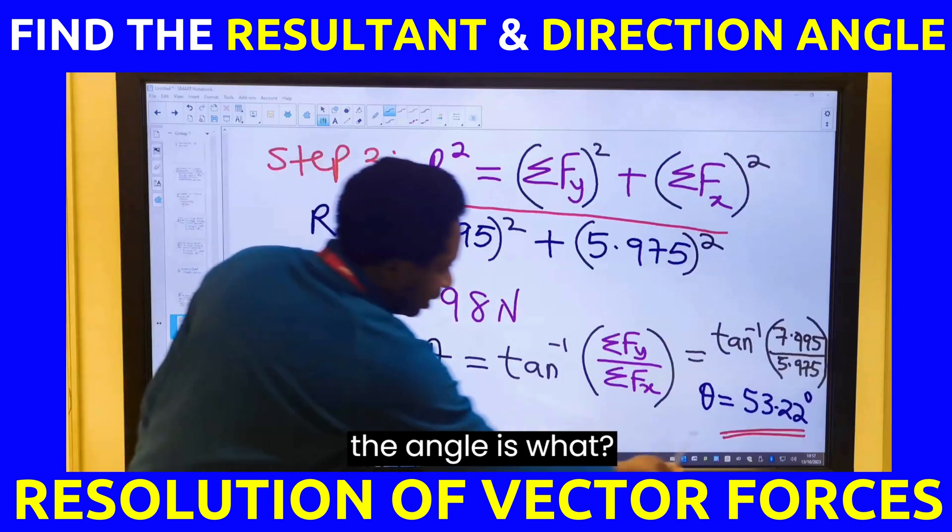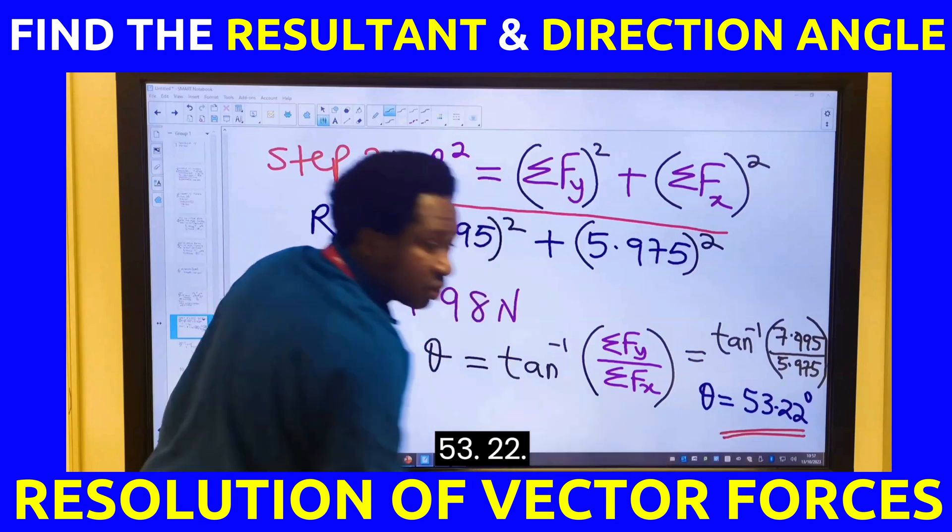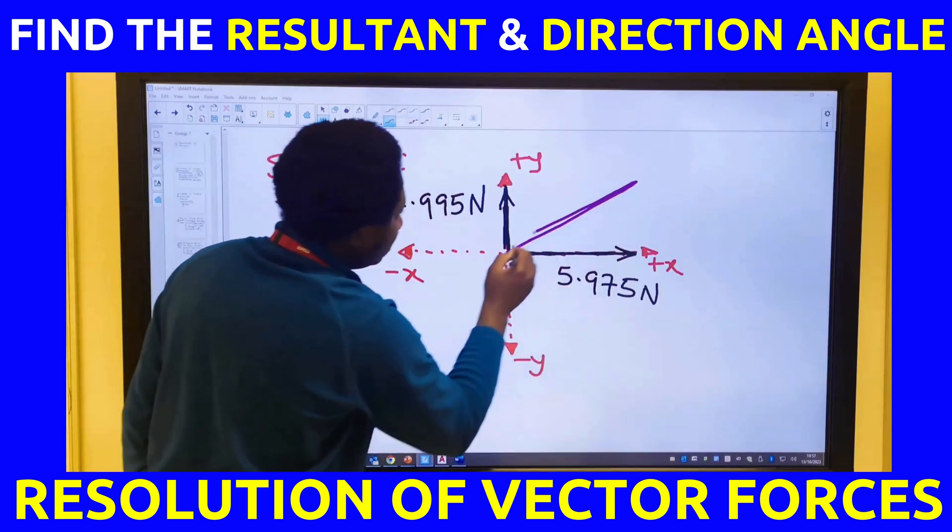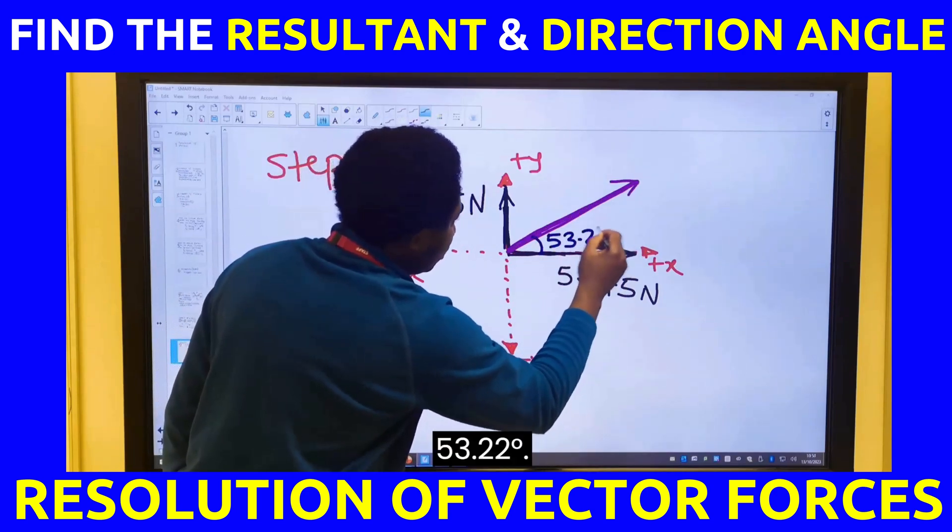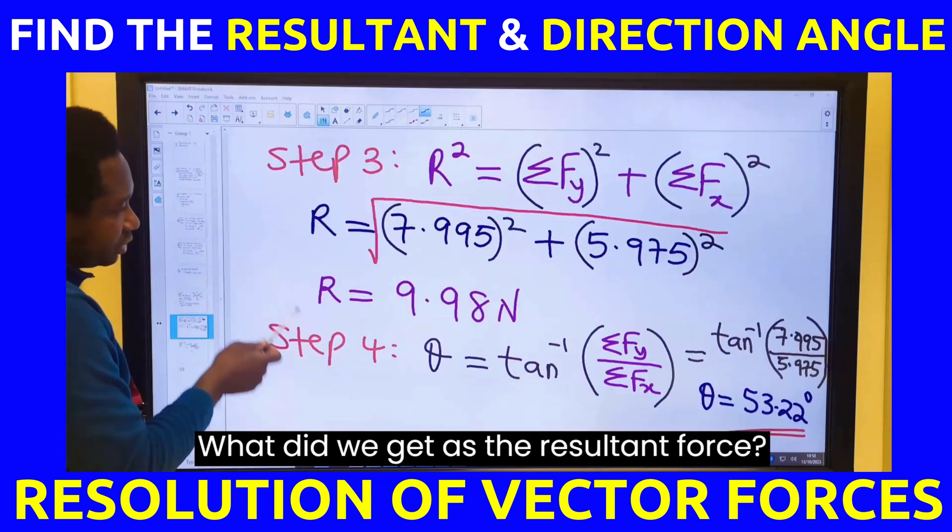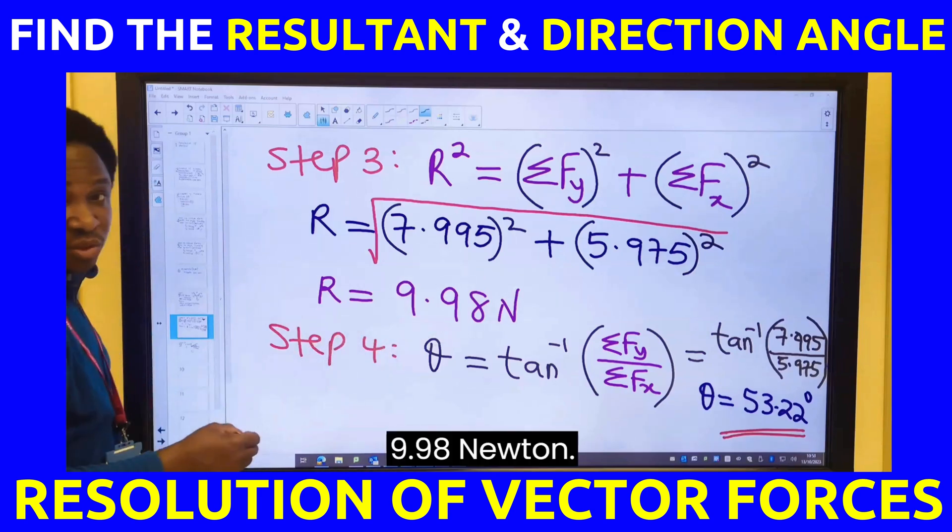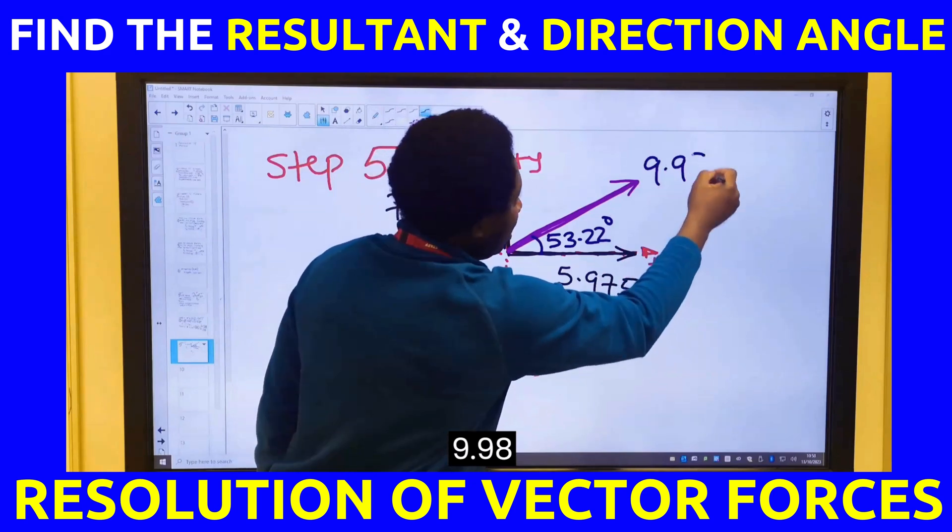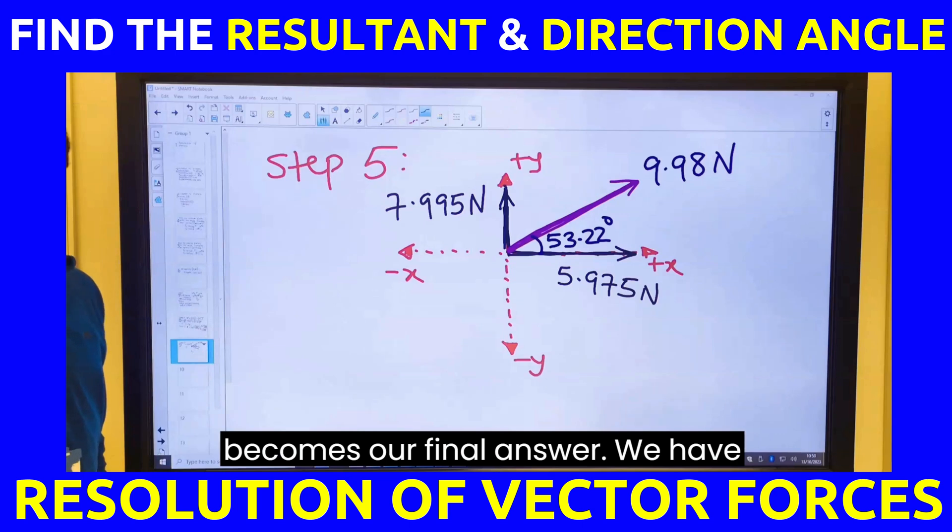Next, the angle is 53.22 degrees. This angle is 53.22 degrees. What did we get as the resultant force? 9.998 newtons. This is 9.998 newtons. This becomes our final answer.